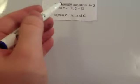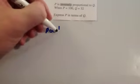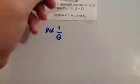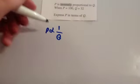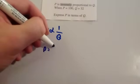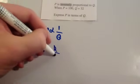So, P is inversely proportional to Q. So, you write P proportional to 1 over Q, whenever it's inversely proportional to Q. Get rid of the proportional sign. So, write P equals K, the constant of proportionality, divided by Q.